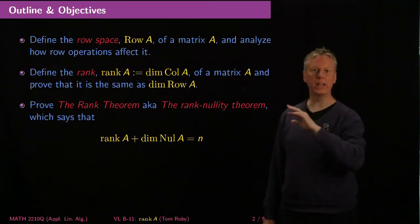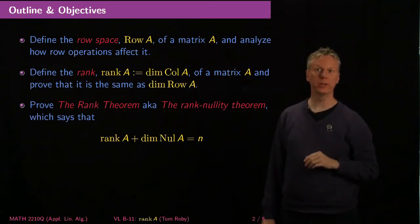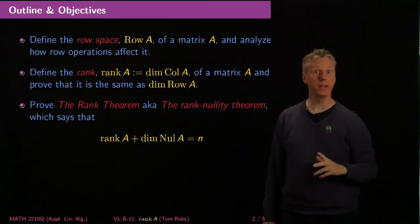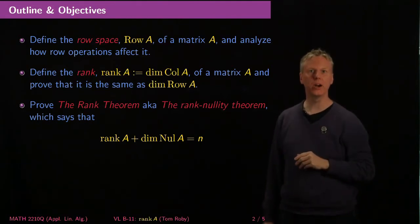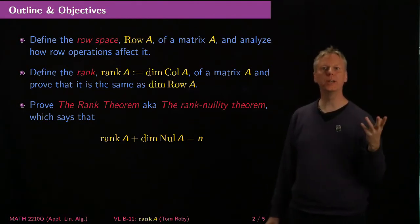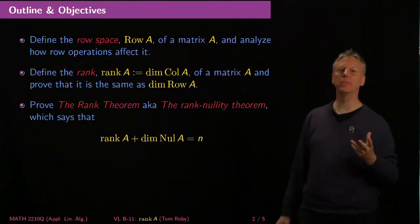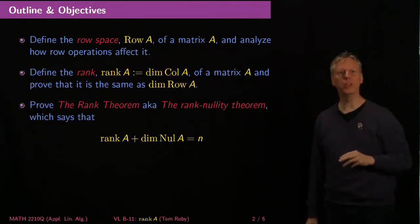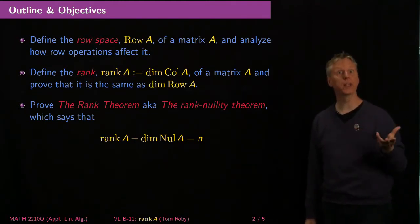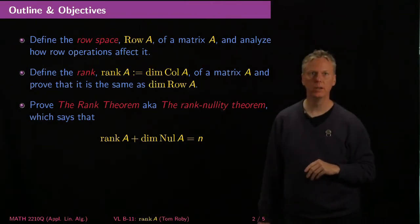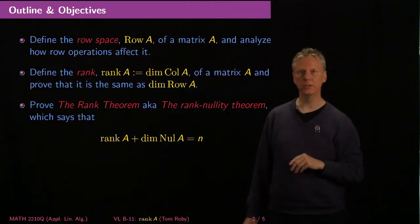Then we'll define the rank of a matrix to be the dimension of the column space — a measure of how big the column space is — and we'll prove that it's the same as the dimension of the row space of the matrix. That's one of the big theorems of linear algebra: row rank equals column rank, and it's not at all obvious from first principles.